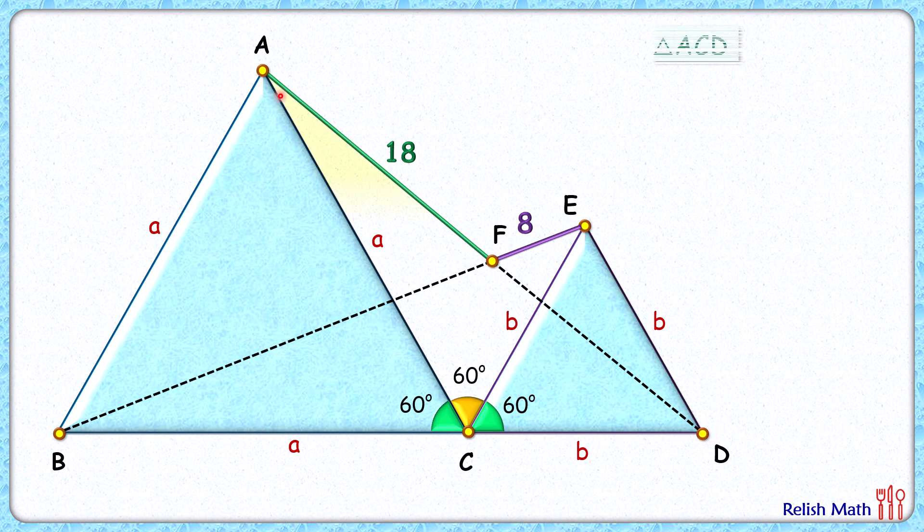Now if you check this yellow triangle, it has side lengths a and b and the angle between them is 120 degrees. Same logic: in this green triangle, side lengths are a and b and the angle between them is 120. So we can say by side-angle-side, these two triangles are congruent to each other.